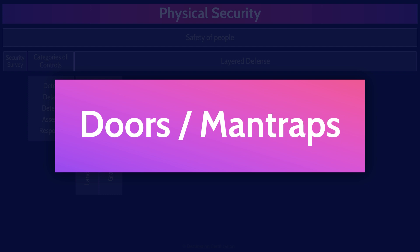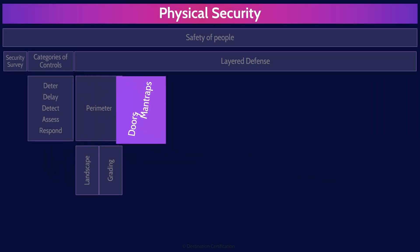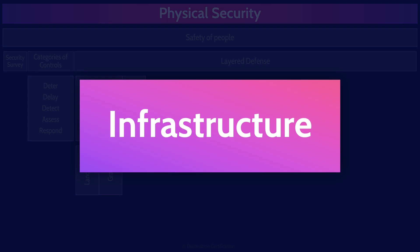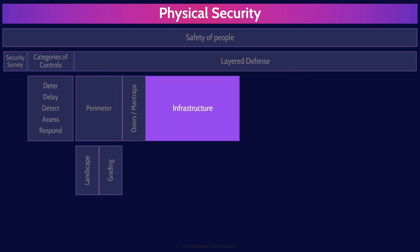Just a quick note on terminology: 'man trap' is a super sexist term — we should really be calling them people traps. But on the exam, we'll call them man traps. Let's now talk about the three major infrastructure services that are critical to the operation of a facility: network, power, and HVAC. Network is all about a reliable connection to the largest distributed network in the world — the internet or other locations for the organization.